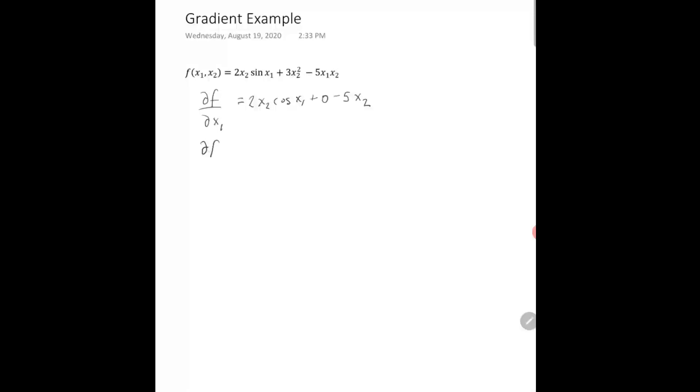Similarly, if I take the derivative with respect to x2, I'm just going to know the sine of x1 is all just like a constant. This is just going to be 2 sine of x1.